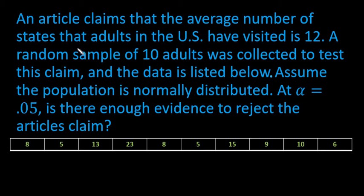In this video I want to show you how to run a t-test when you are given the data. We have an article claiming that the average number of states that adults in the U.S. have visited is 12. A random sample of 10 adults was collected to test this claim and the data is listed below. Assume the population is normally distributed. At alpha equals 0.05, is there enough evidence to reject the article's claim?